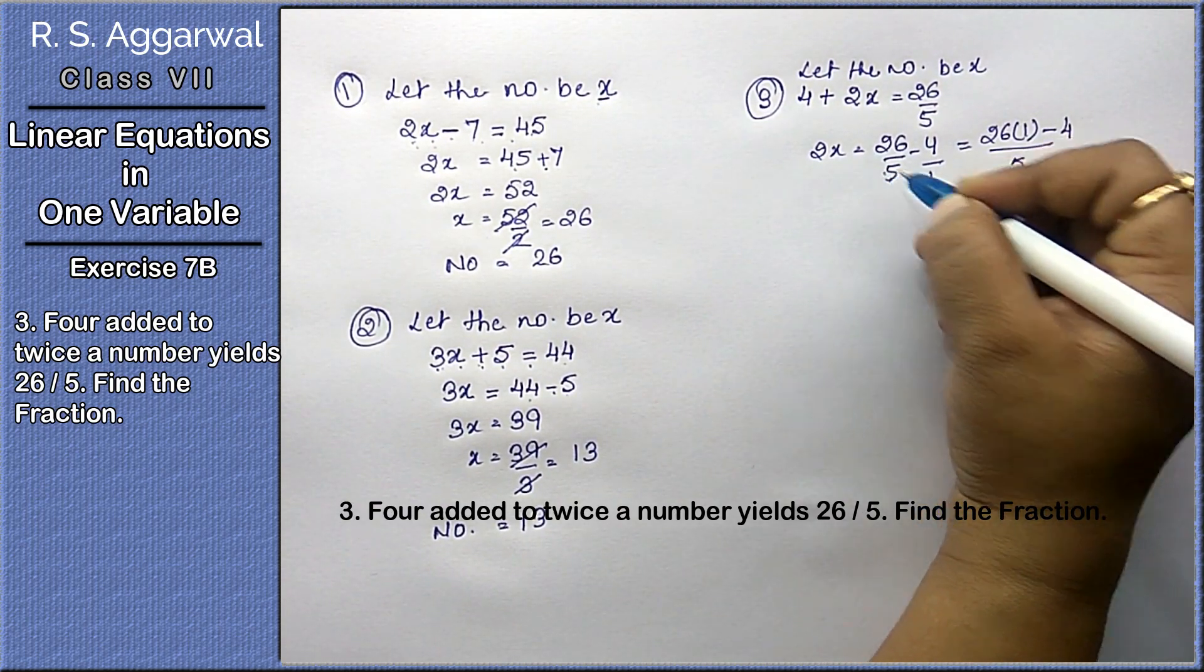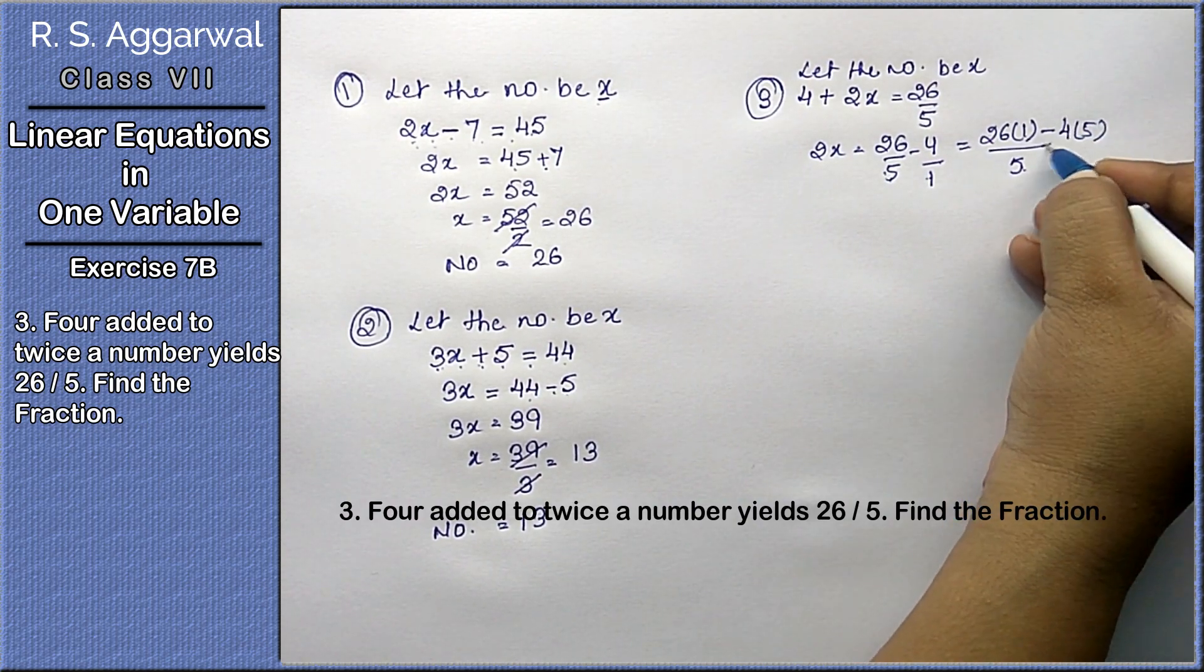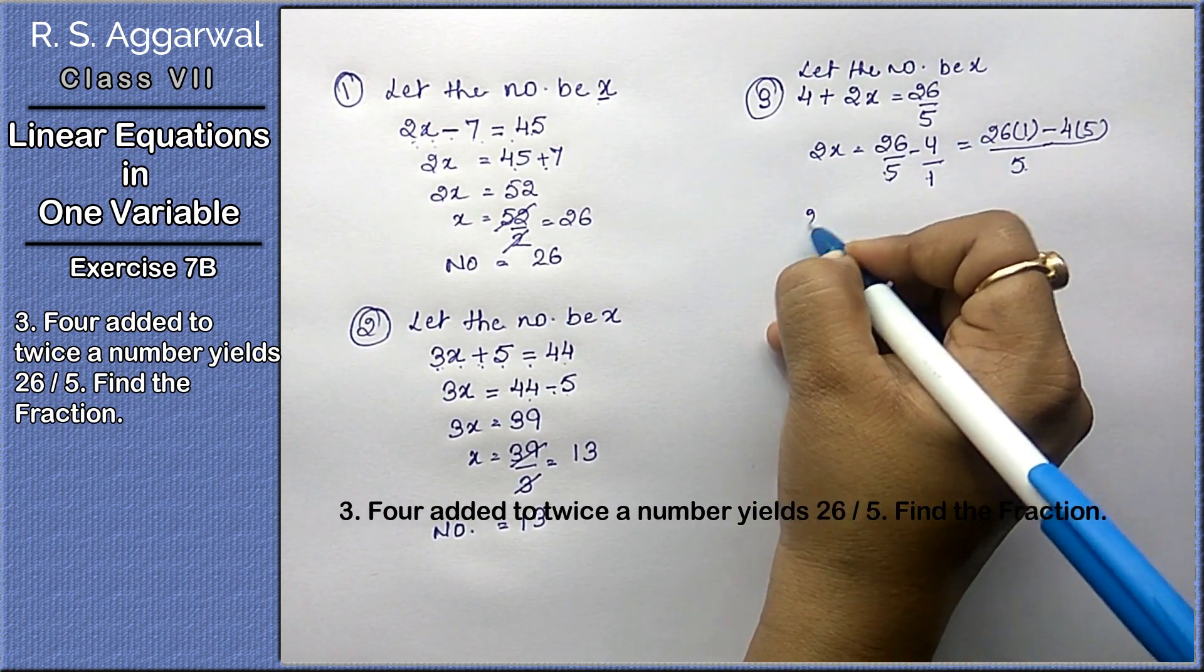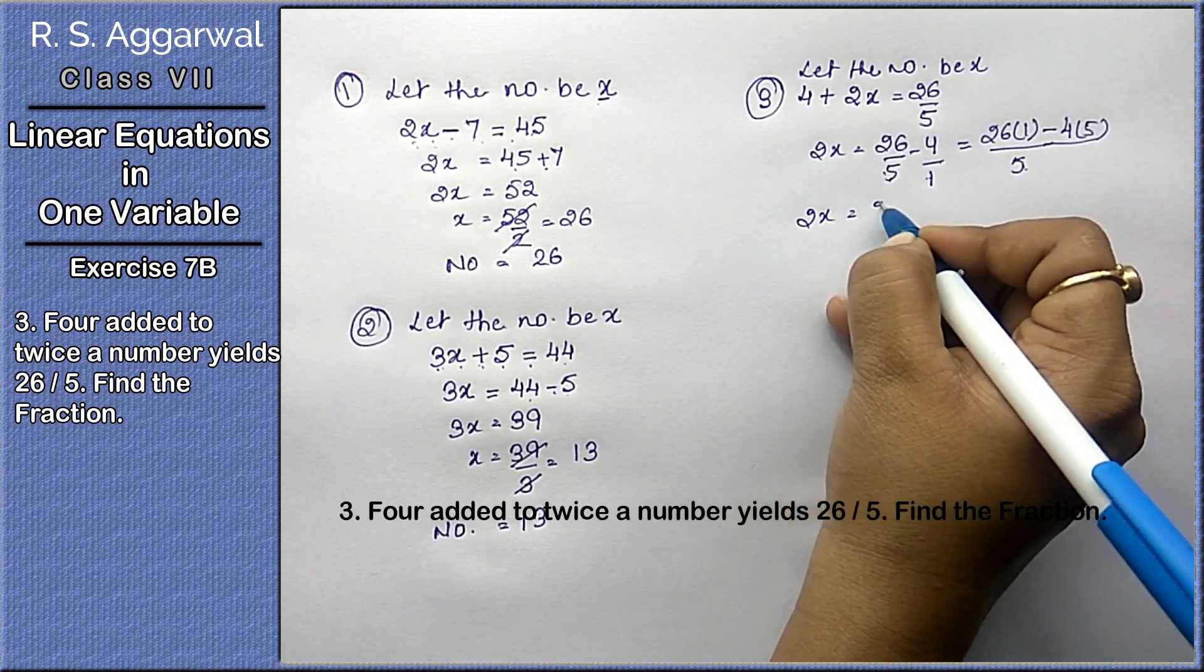5 ones are 5, so 26 multiplied by 1 minus 4 multiplied by 5. 2x equals 26 minus 20.